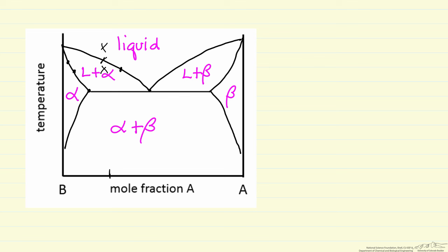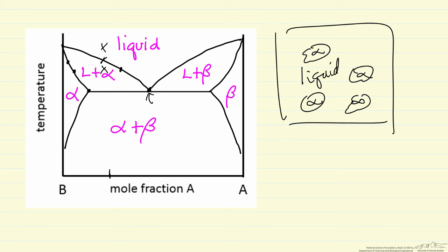So at the eutectic temperature now, we have alpha phase, and we have a liquid of this composition, the eutectic composition. So then what we've done is we've made a polycrystalline alpha structure in a liquid. And the liquid, when we get to the eutectic temperature, has the eutectic composition.